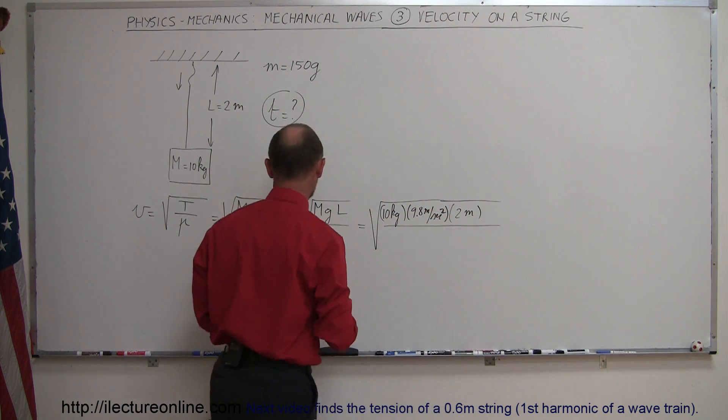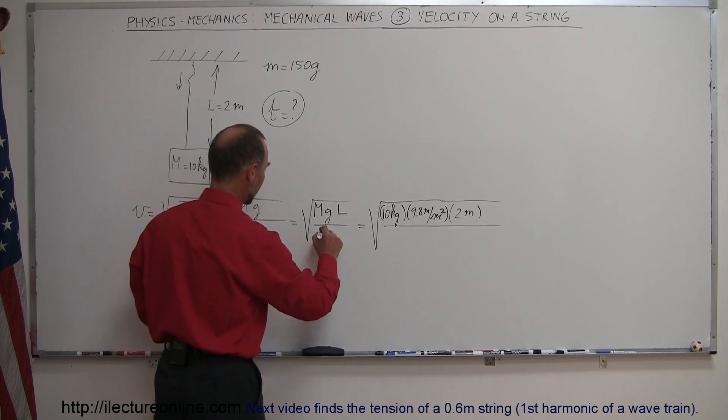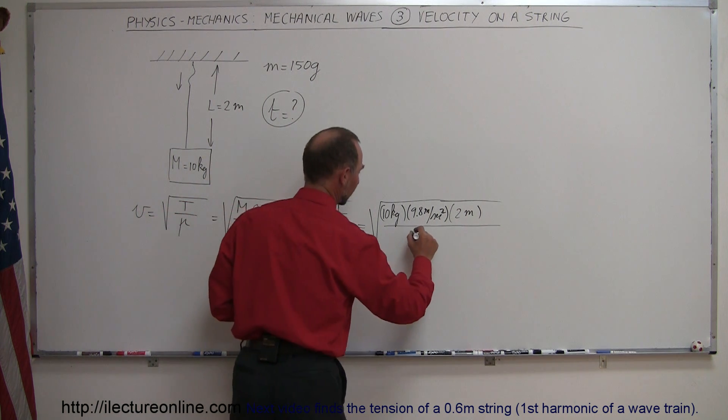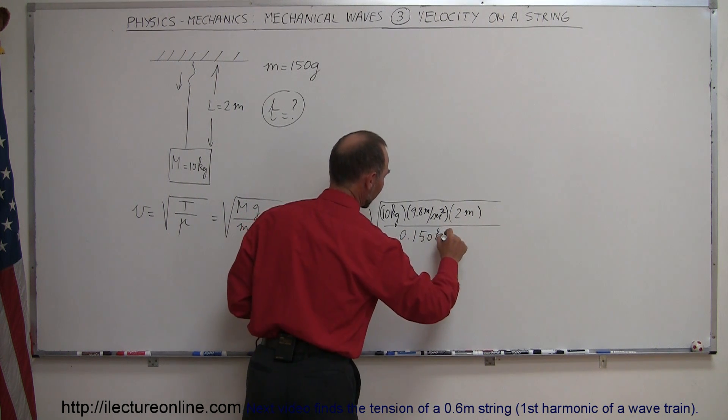Oh wait a minute, I don't want mu anymore, I have an m down here, so that means I want a small m here, and the small mass is 150 grams, which is 0.150 kilograms.